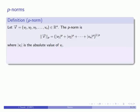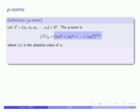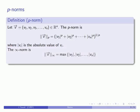Another way we can generalize this concept is to use what's called the p-norm. For some vector in Rn, the p-norm is defined as the p-th root of the sum of the p-th powers of the absolute value of the components of the vector. And because mathematicians like taking things to extremes, we'll also talk about the infinity norm, which is the maximum of the absolute values of the vector components.